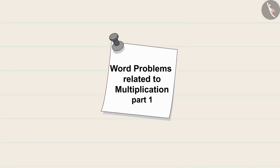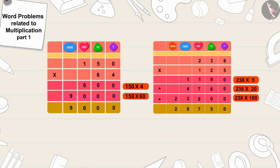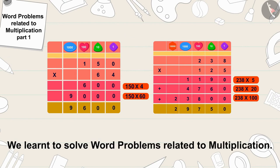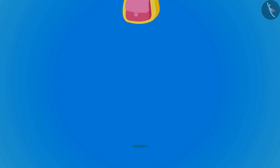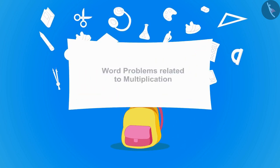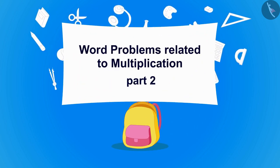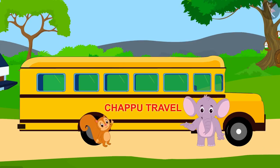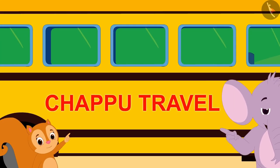Hello children! In the previous video we learned to solve word problems related to multiplication. In this video we will learn more about it through some more interesting examples. Chanda and Appu together have opened Chappu Travel Company.